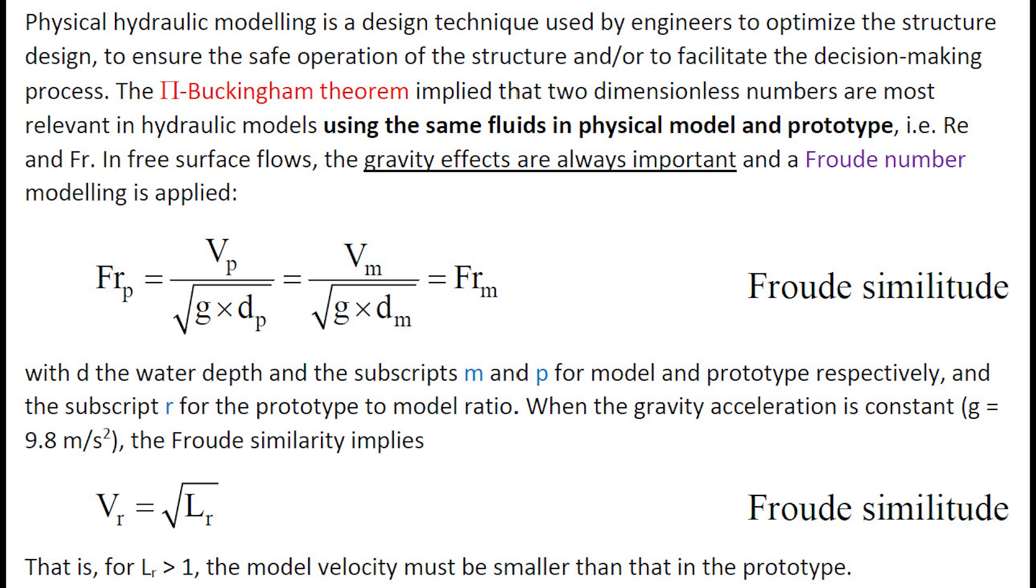Physical hydraulic modeling is a design technique used by engineers to optimize the structure design. The Buckingham Pi theorem implies that two dimensionless numbers are most relevant in hydraulic models. Using the same fluids in physical model and prototype, that are the Reynolds and Froude numbers. In free surface flow, the gravity effects are always important and Froude number modeling is applied.